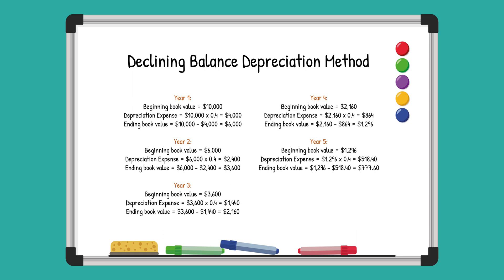Our depreciation rate here is double the straight line rate, meaning 40% instead of 20%. In the first year, we calculate 40% of $10,000, which is $4,000. So now the new book value is $6,000. Each year, we apply the 40% rate to the new book value, leading to a continuously decreasing depreciation expense.